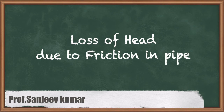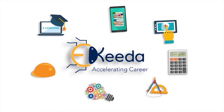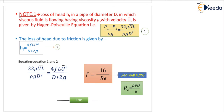Hello friends, in this video we are going to see loss of head due to friction in pipe. As per note 1, loss of head HF is generally written as P1-P2 by rho g. Loss of head HF in a pipe of diameter D in which a viscous fluid is flowing, having viscosity mu with average velocity u bar, is given by the Hagen-Poiseuille equation.